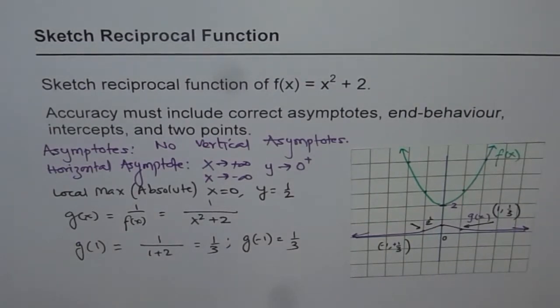So these are the points which we can plot, and I think that gives a fairly good idea about how to sketch the reciprocal of such a quadratic function which has no x-intercepts and thereby no vertical asymptotes. I hope you find it interesting. Thank you.